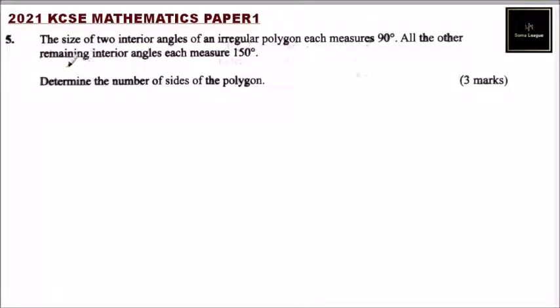Question number five: The size of two interior angles of an irregular polygon each measures 90 degrees. All the other remaining interior angles each measure 150. Determine the number of sides of the polygon. So we use this formula: (2n - 4) × 90° to determine the sum of the interior angles of a polygon.